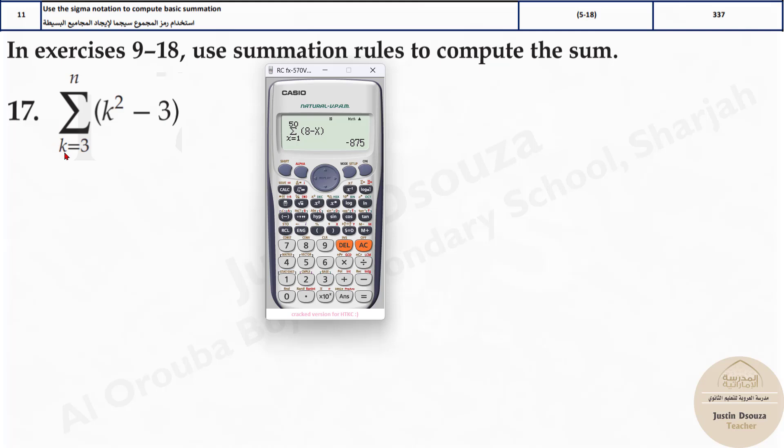You know, it starts k equals 3 and ends at n, which is not known. And over here, it's k squared minus 3. So, let's write it out. Shift and log base symbol. You get this summation.